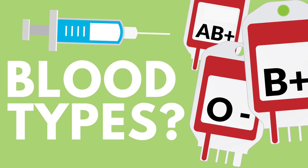Blood antigens are present in blood, but can also be found elsewhere. For instance, these antigens are present in the digestive tract, from the mouth up to the colon, and also in the nostrils and lungs.